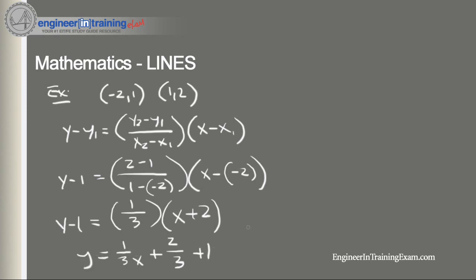Combine all the terms and we get y equals 1 third x plus 5 thirds. So we used the two-point form here to define the equation and put it into the standard form.